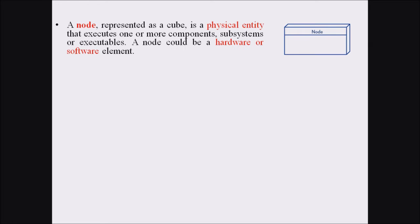The major symbols or notations used in a deployment diagram are as follows. Firstly, we have a node, which is represented as a cube. A node is a physical entity that executes one or more components, subsystems, or executables, and it could be a hardware or software element. Similar elements are grouped into a node and represented with the help of a cube.